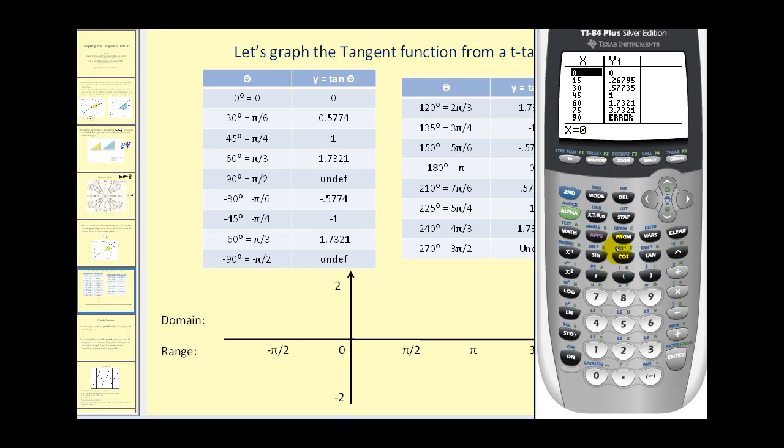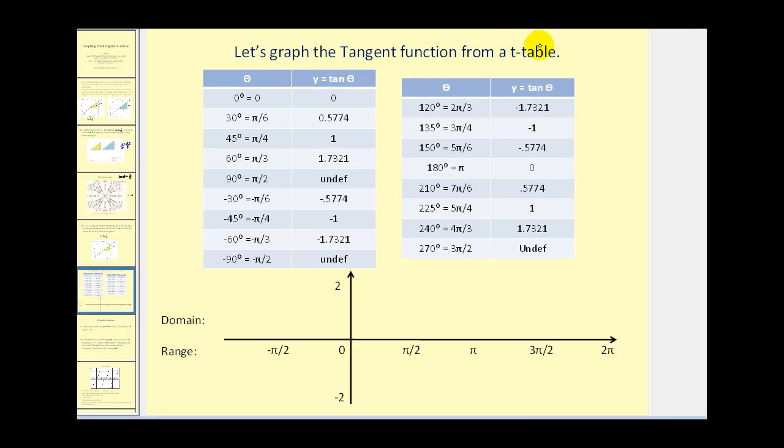Let's plot some of these function values. At zero degrees tangent theta is zero. At 30 degrees it's approximately 0.58. At 60 degrees it's 1.7. Then notice at 90 degrees it's undefined—that will produce a vertical asymptote. So as this function approaches pi over two, it increases without bound like this.